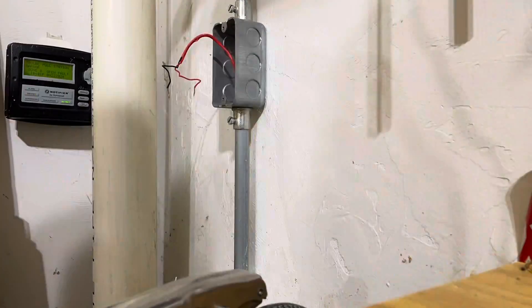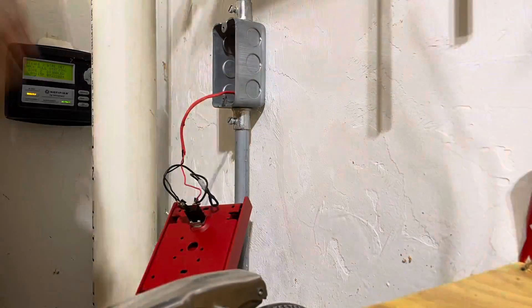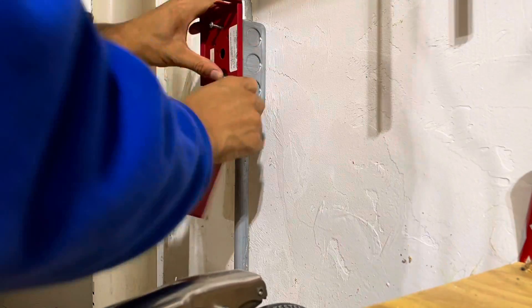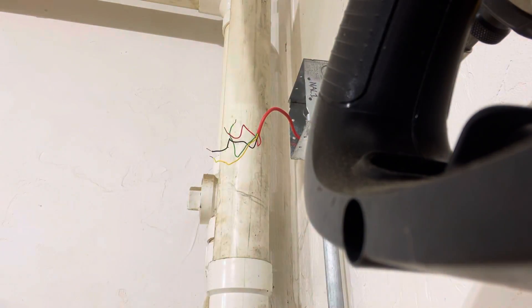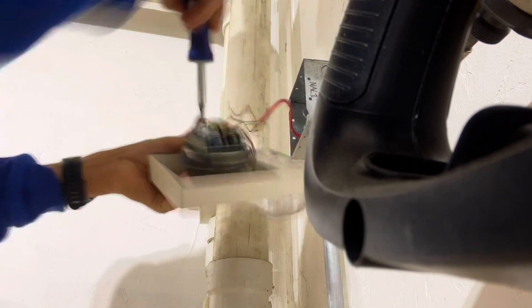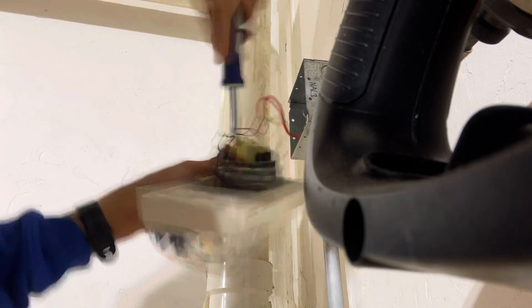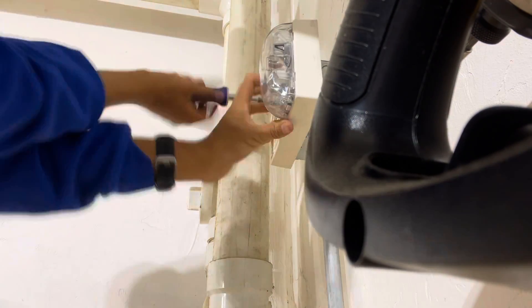Out here in the garage I'm replacing this other federal signal pull station with a conventional simplex t-bar. Nice and standard single action version and up at the horn strobe I'm actually reusing that 4x4 box to install the speaker strobe. In this case because this device is the last device on the circuit it is not that cramped in the junction box and I was able to fit the entire device onto the 4x4 box.